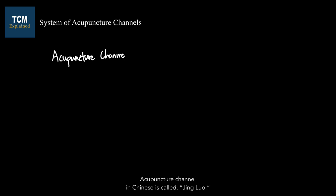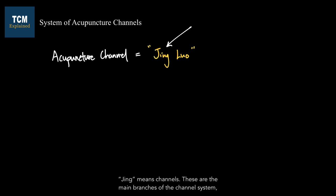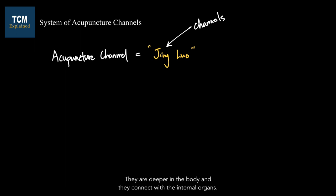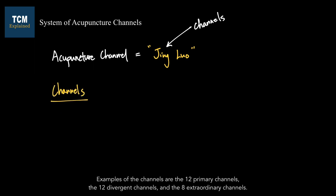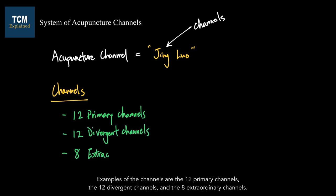Acupuncture channel in Chinese is called jingluo. Jing means channels — these are the main branches of the channel system, which generally run up and down through our body. They are deeper in the body and they connect with the internal organs. Examples of the channels are the 12 primary channels, the 12 diversion channels, and the 8 extraordinary channels.